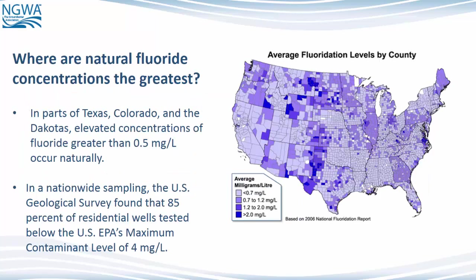Where are natural fluoride concentrations the greatest? In parts of Texas, Colorado, and the Dakotas, elevated concentrations of fluoride greater than 0.5 mg per liter occur naturally. In a nationwide sampling, the U.S. Geological Survey found that 85% of residential wells tested below the U.S. EPA's maximum contaminant level of 4 mg per liter.